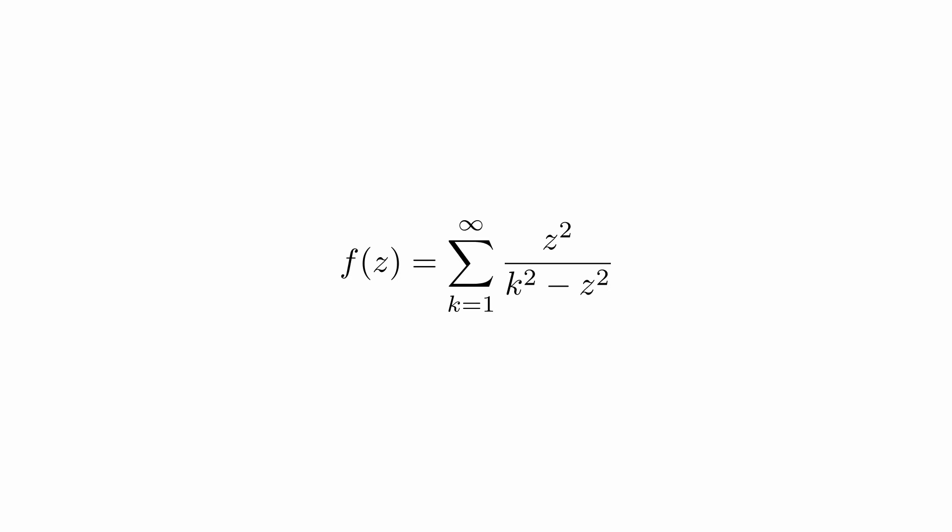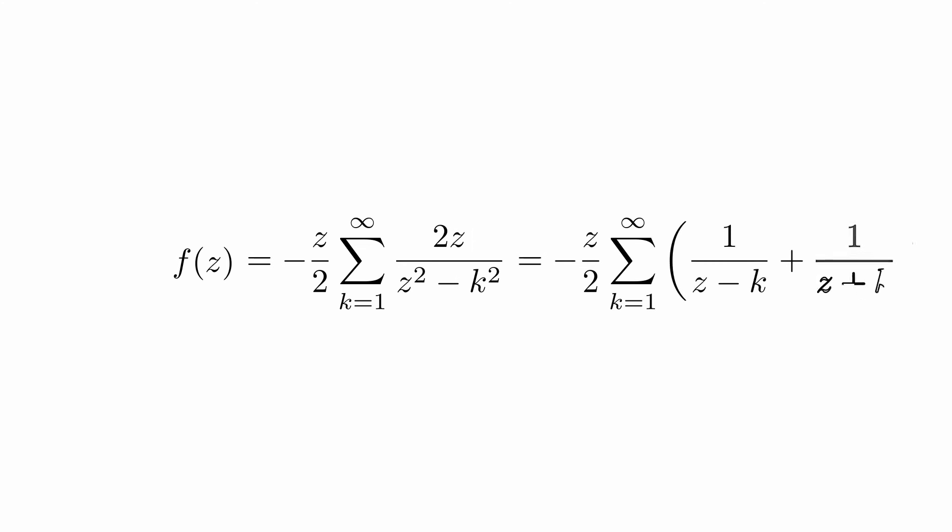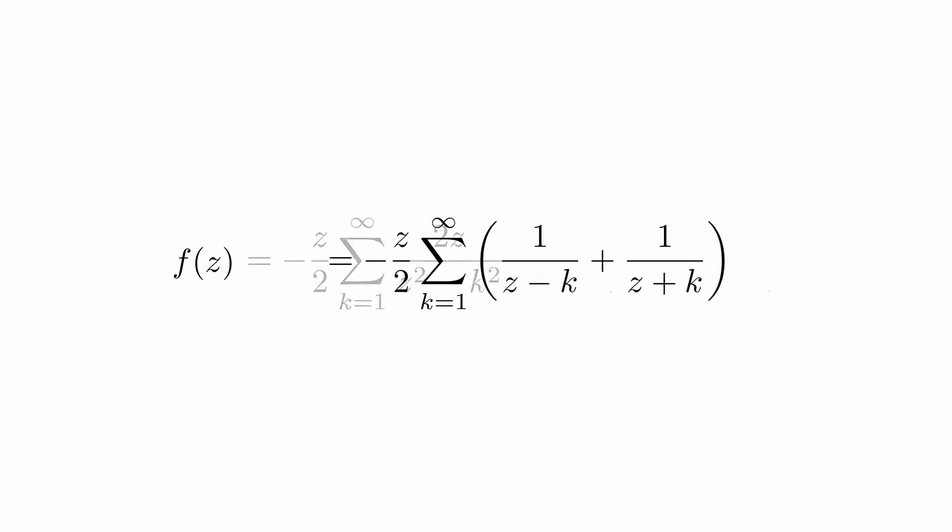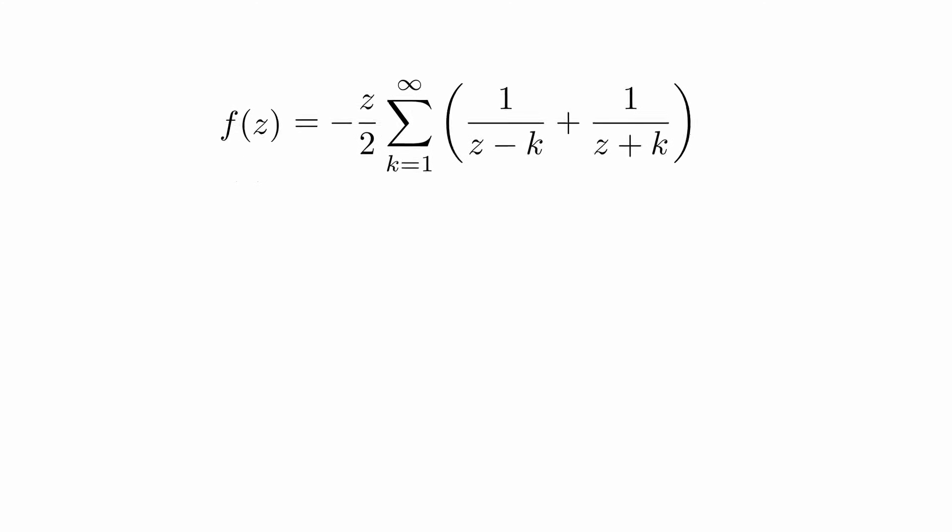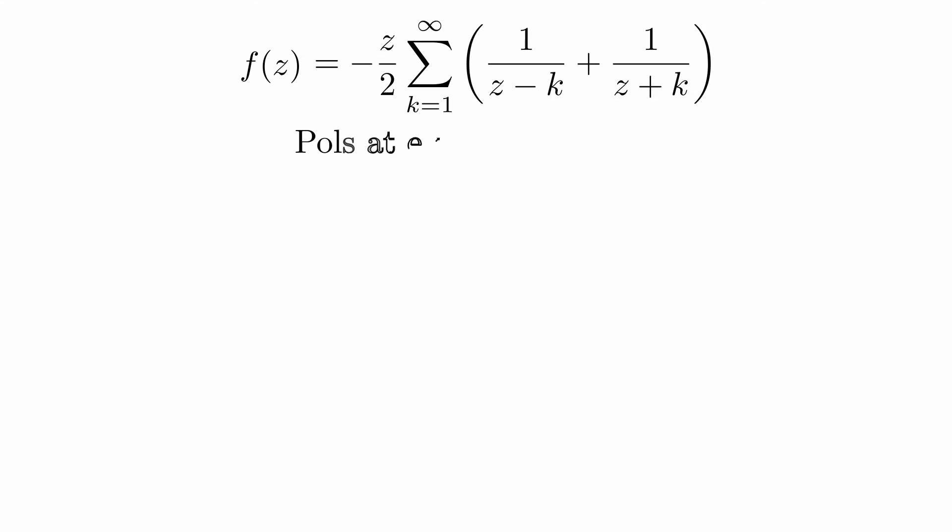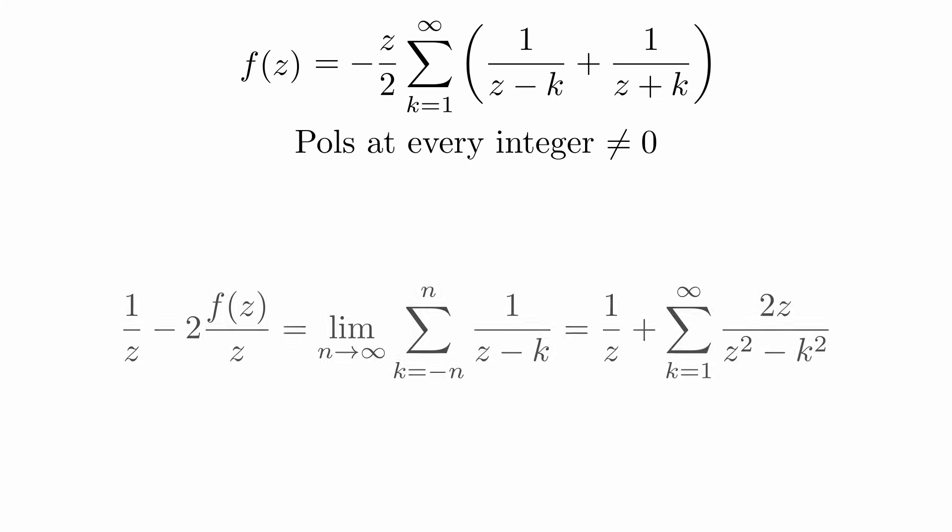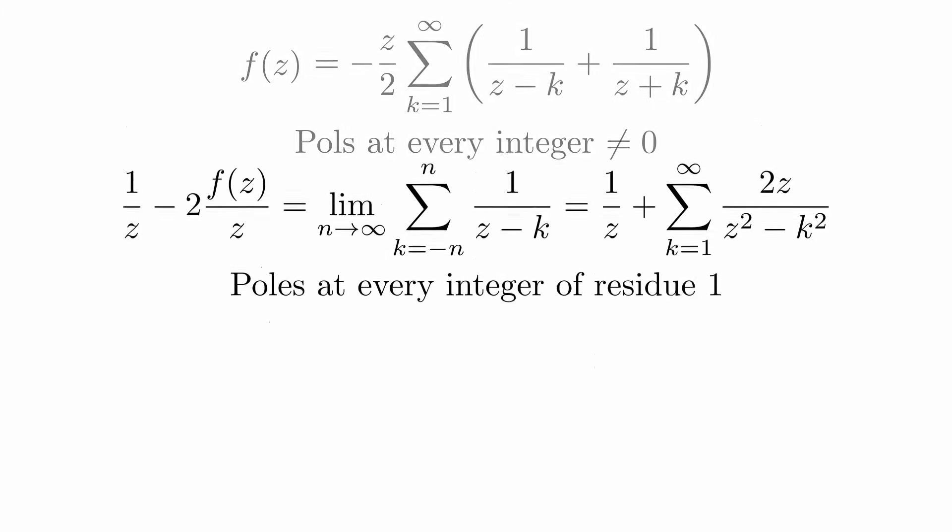We can now perform some basic algebraic manipulations and finally we obtain this form, where you can see that f has poles at every integer not equal to 0. So by dividing by the term in the front of the sum and adding a 1 over z, we get a function which has a pole at every integer of residue 1.